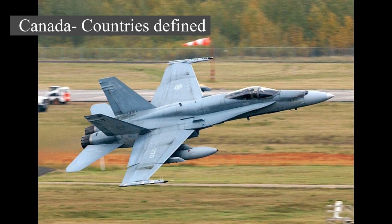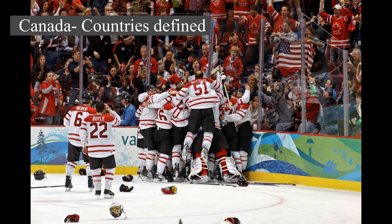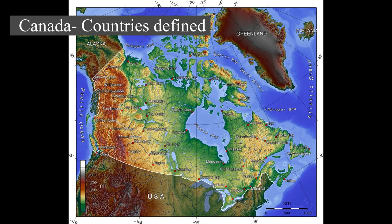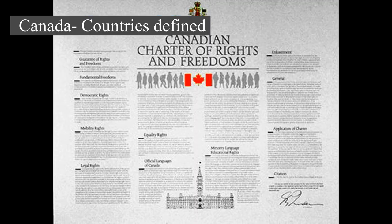Indigenous peoples have continuously inhabited what is now Canada for thousands of years. Beginning in the 16th century, British and French expeditions explored and later settled along the Atlantic coast. As a consequence of various armed conflicts, France ceded nearly all of its colonies in North America in 1763. In 1867, with the union of three British North American colonies through Confederation, Canada was formed as a federal dominion of four provinces. This began an accretion of provinces and territories and a process of increasing autonomy from the United Kingdom, highlighted by the Statute of Westminster 1931.